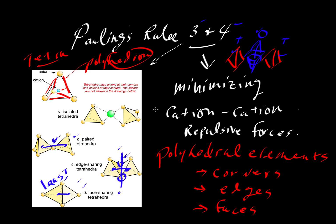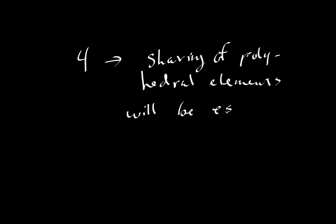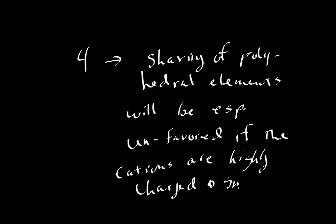So, let's erase the board and take a look at number four. So, rule number four is a corollary to number three. And that says simply that the sharing of polyhedral elements will be especially unfavored if the cations are highly charged and have a small radius. Cations are highly charged and small radius. This is way too much writing. Let's rewrite this.